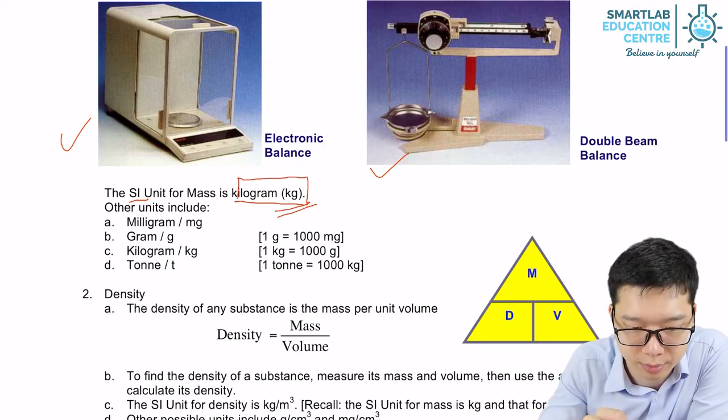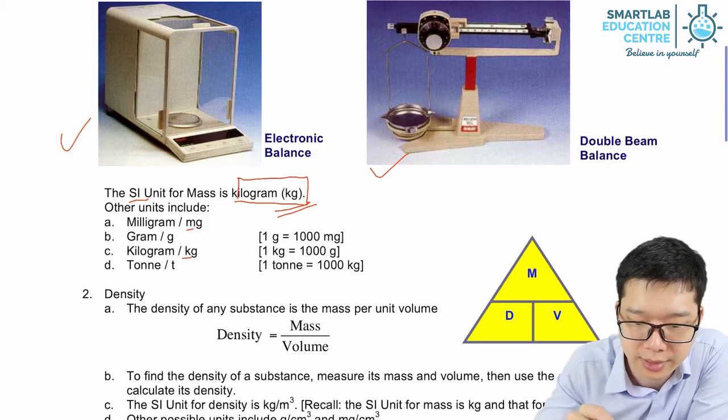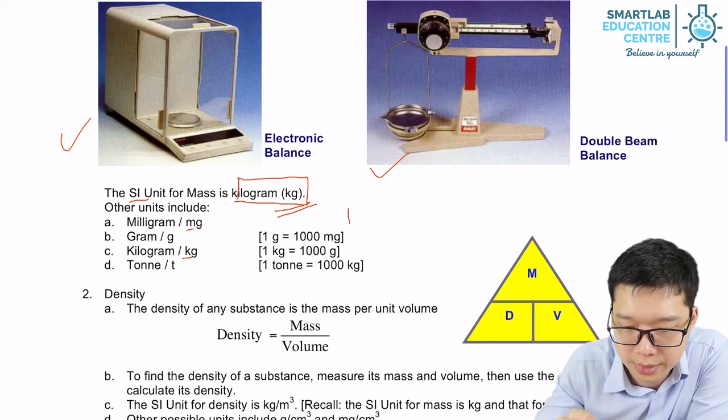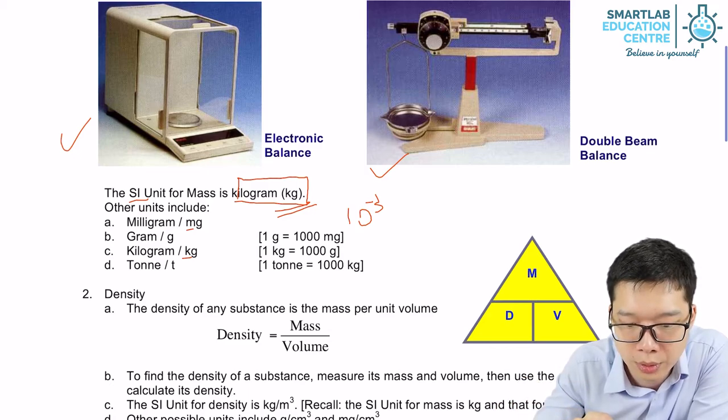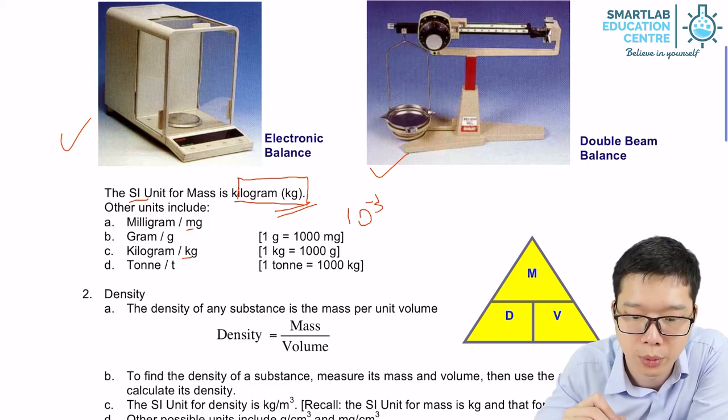And then similarly we have prefixes. Prefixes M, nothing, K. M stands for 10 to the power of minus 3. You can also remember as 1000 mg equals to 1 g. 1000 g equals to 1 kg.